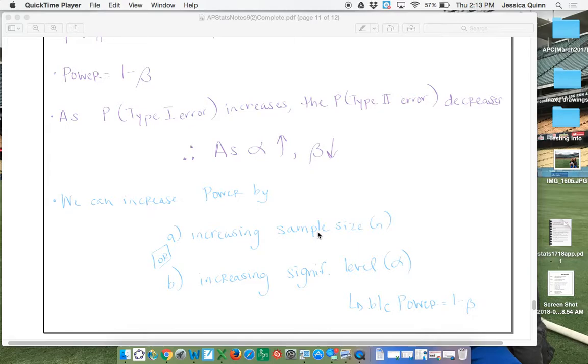So again, the power of a test is the probability that the test will reject the null when the alternative is true. So the power basically measures the ability of the test to detect an alternative value of the parameter.